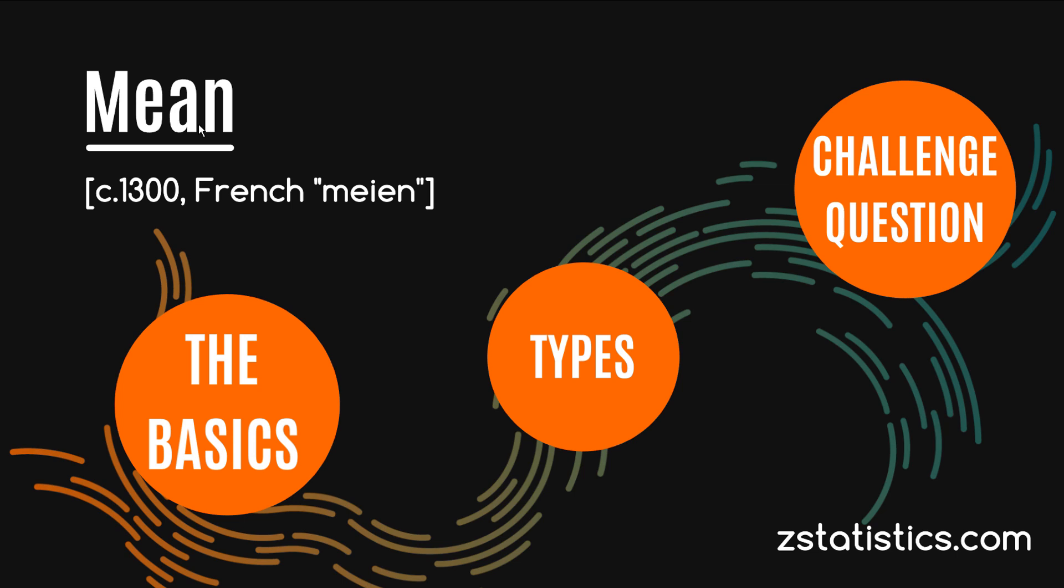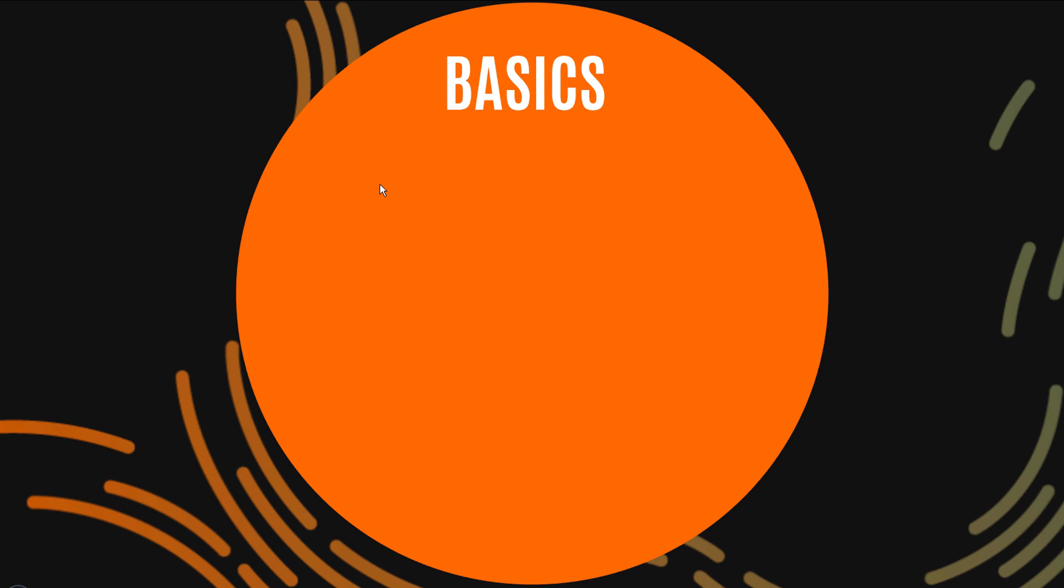Now the earliest reference to the word mean comes from the 1300s from the French. I'm going to guess that's pronounced main. Someone that's French could tell me it's just pronounced mean maybe, I don't know. But it's a term that's been around for a long time and initially it was used to describe the middle point in between two musical notes and we'll see that pops up a bit later when we talk about harmonic means.